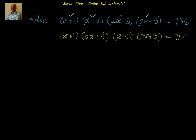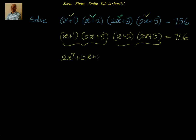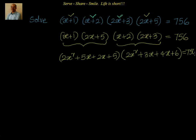The idea is: if I multiply these groups separately and I am getting the same terms with respect to x square and x, then I can substitute that with another variable. If you multiply x plus 1 into 2x plus 5, you get 2x square plus 5x plus 2x plus 5, which is 2x square plus 7x plus 5. Similarly, x plus 2 into 2x plus 3 gives 2x square plus 3x plus 4x plus 6, which is 2x square plus 7x plus 6.